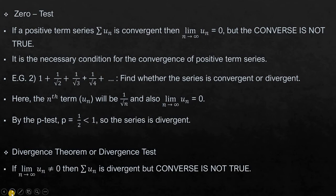Next is the divergence theorem or the divergence test. It is derived from the zero test itself. It states that if limit n tending to infinity u_n is not equal to zero, then sigma u_n will be divergent. But the converse of this theorem is also not true.